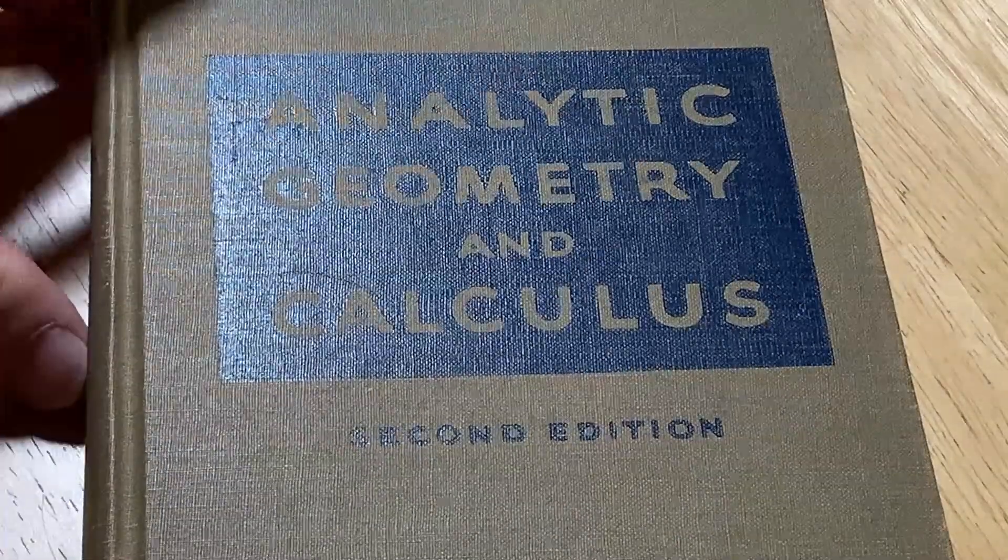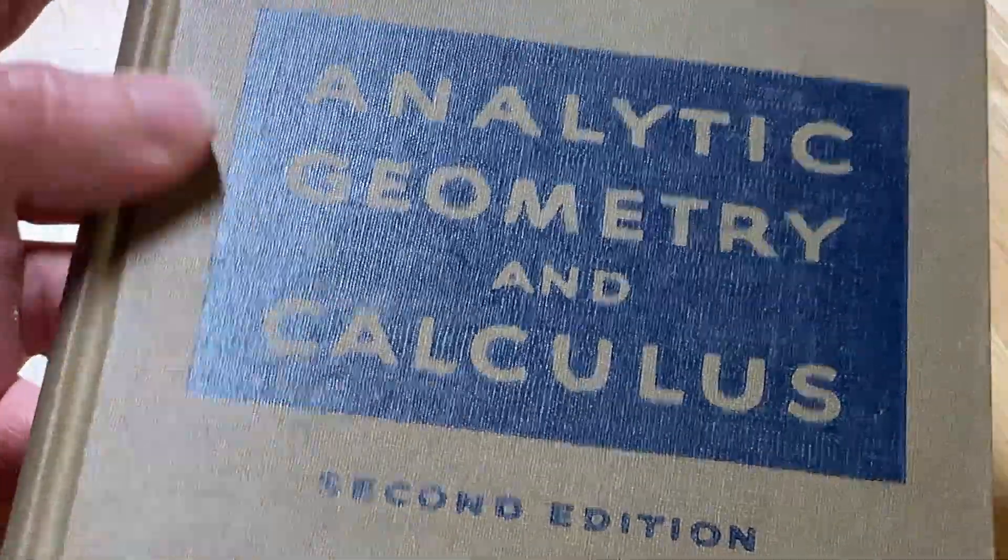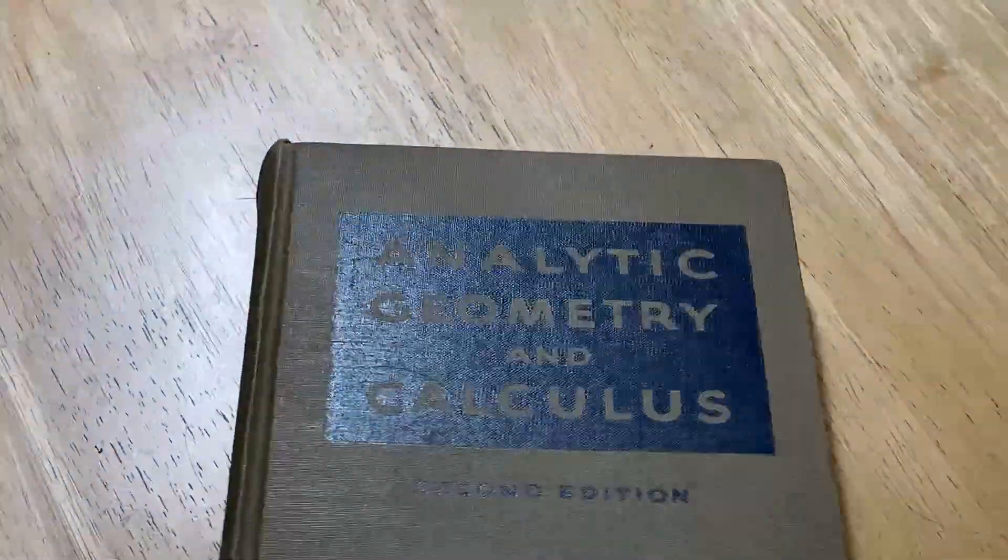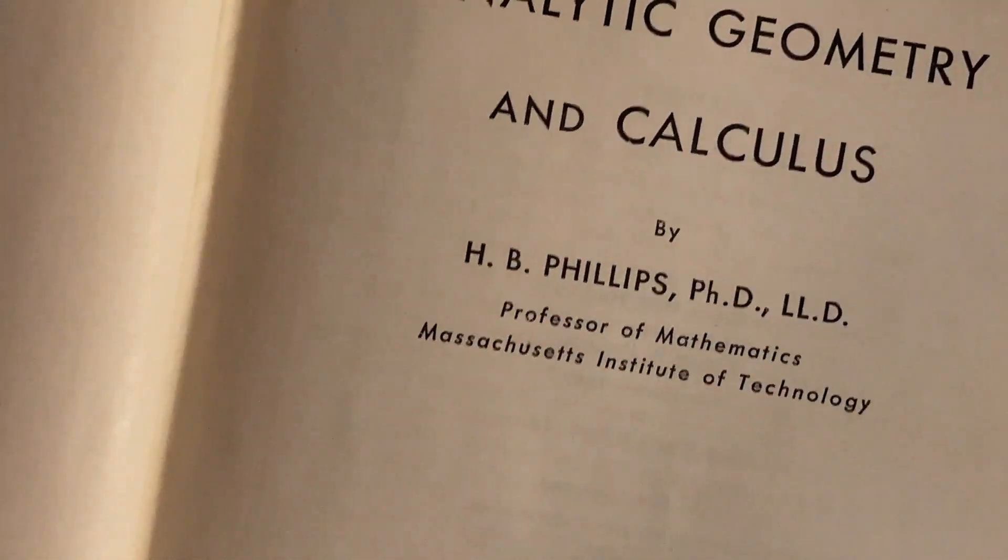Let's do some mathematics. Let's quickly look at the contents of the book before we do a problem so you can see what it actually contains. Analytic Geometry and Calculus, 2nd Edition. We won't spend too much time with it. And there's the legend, H.B. Phillips, PhD, LLD.